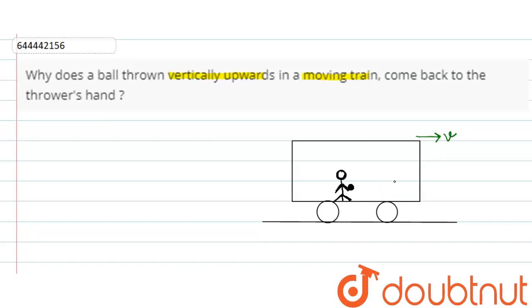If we see the train in the ground frame, we will observe that the train is moving with speed v, as well as the observer is also moving with speed v as he is inside the train. Now, the key